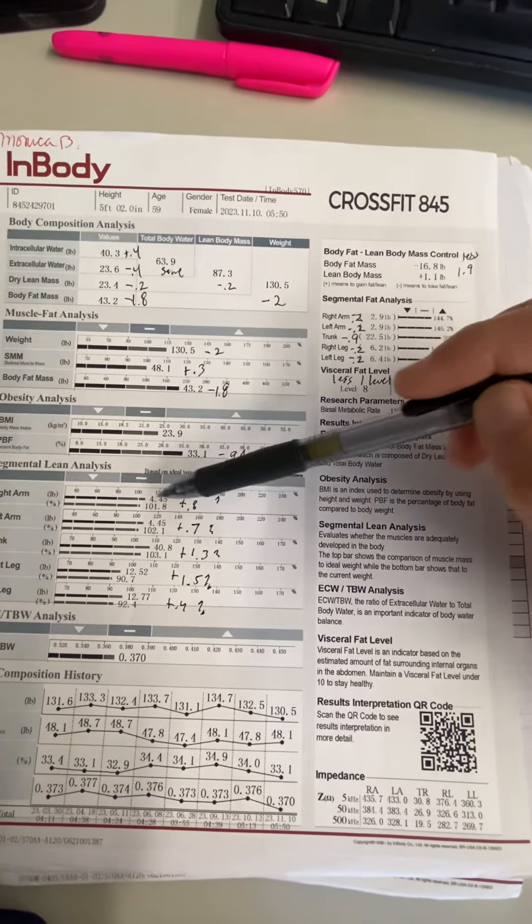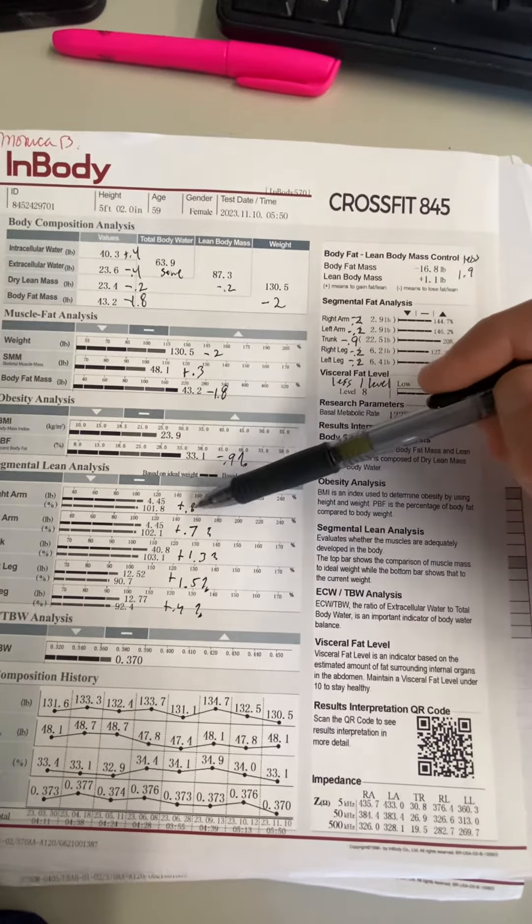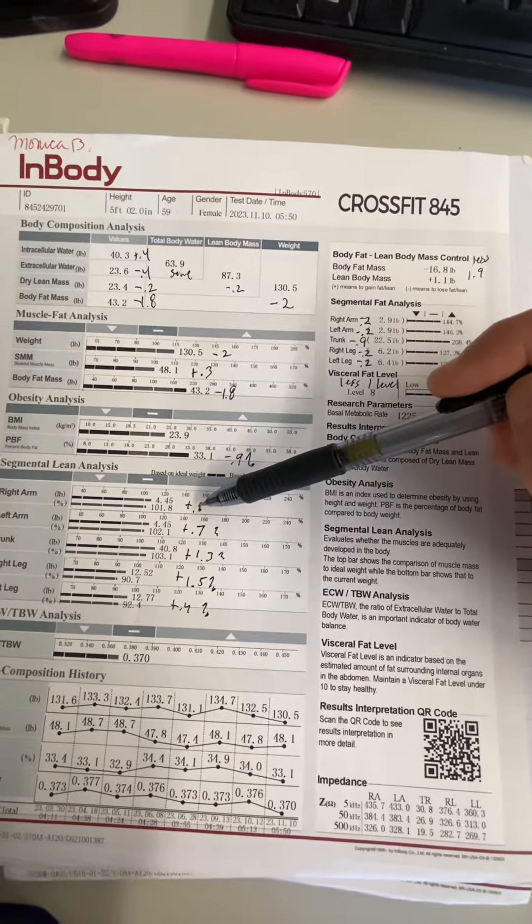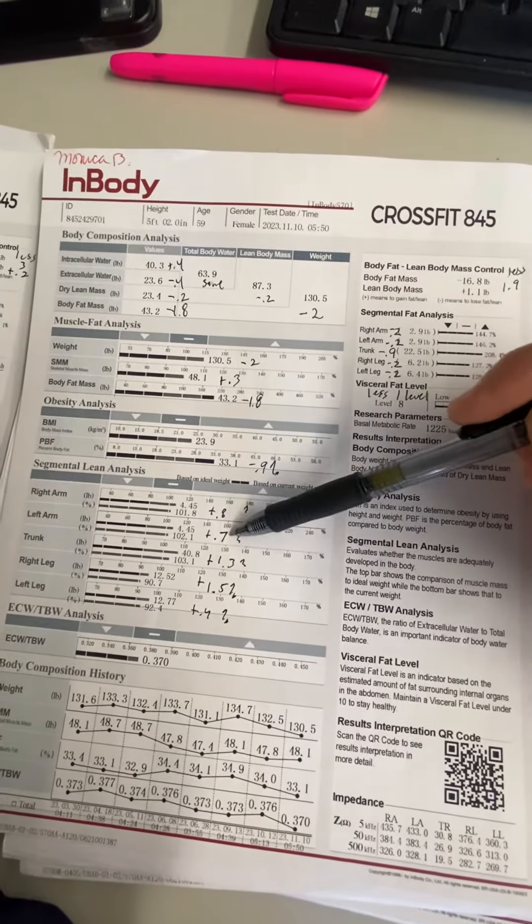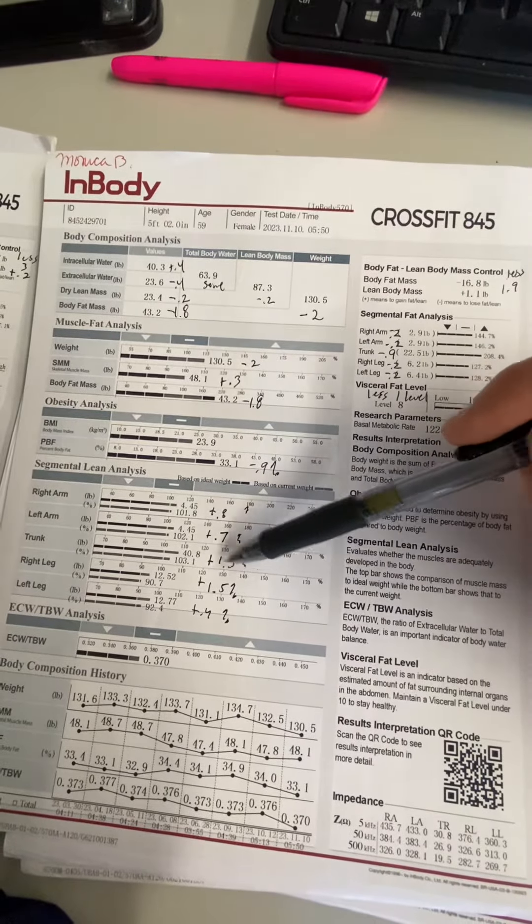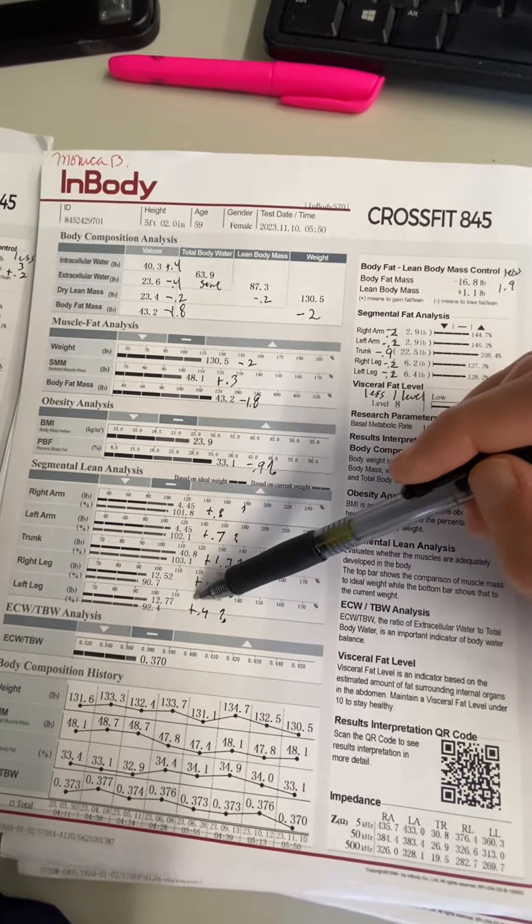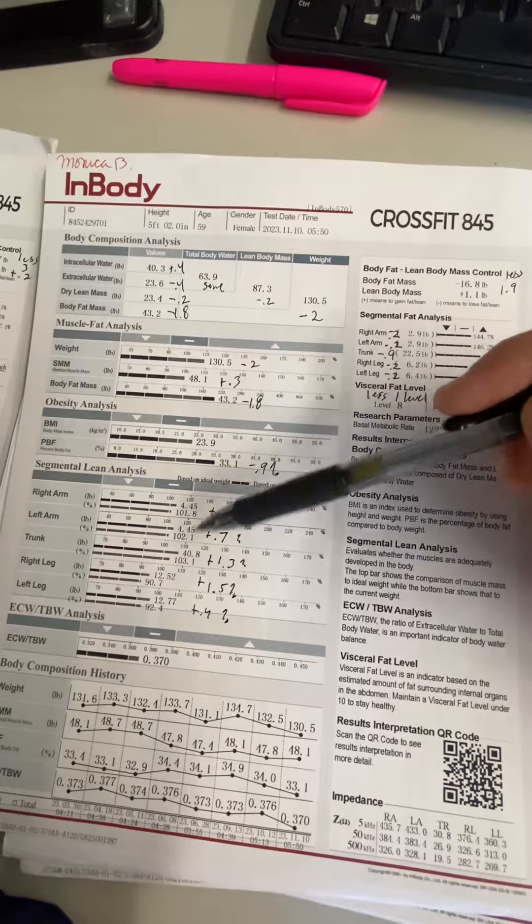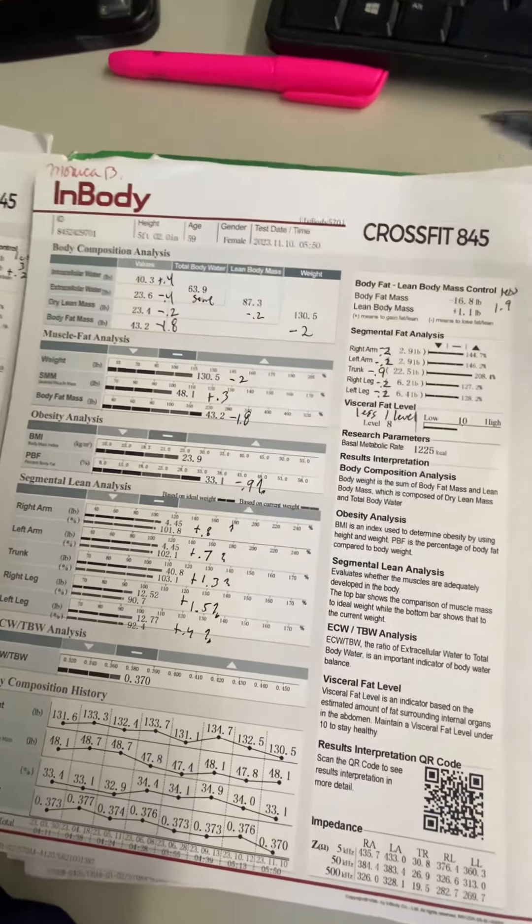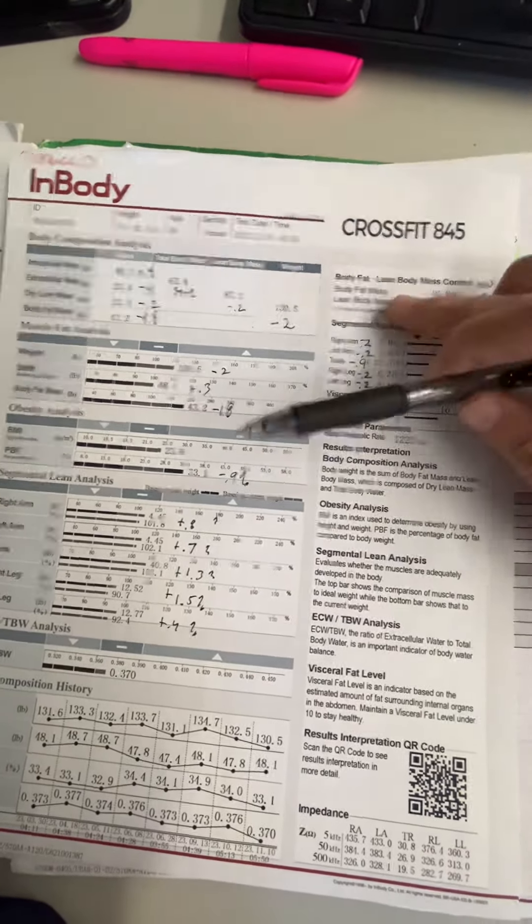And then - I love seeing all areas of your body increasing their ability to support your body weight. Your right arm 0.8, left arm 0.7, trunk 1.3%, your right leg 1.5%, and your left leg 0.4%. All of that, especially for you - a lot of times we'll see those things dip down - went up, which is great.